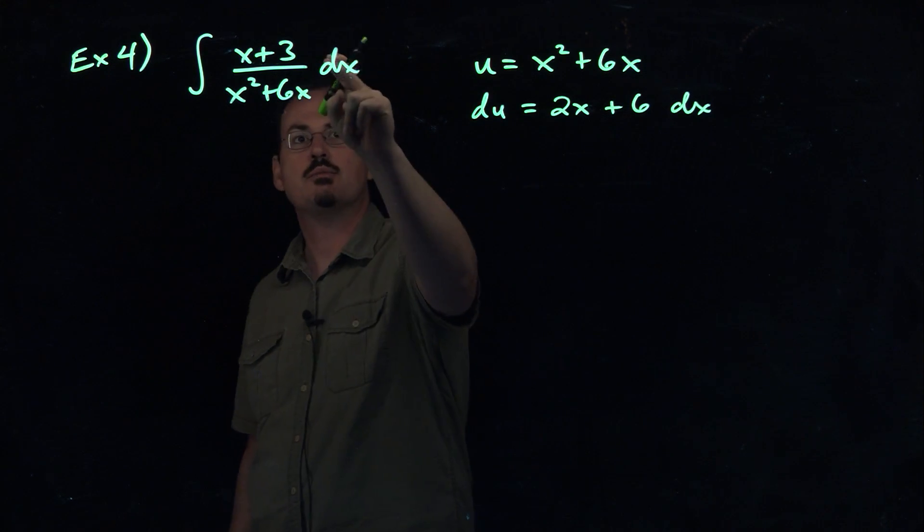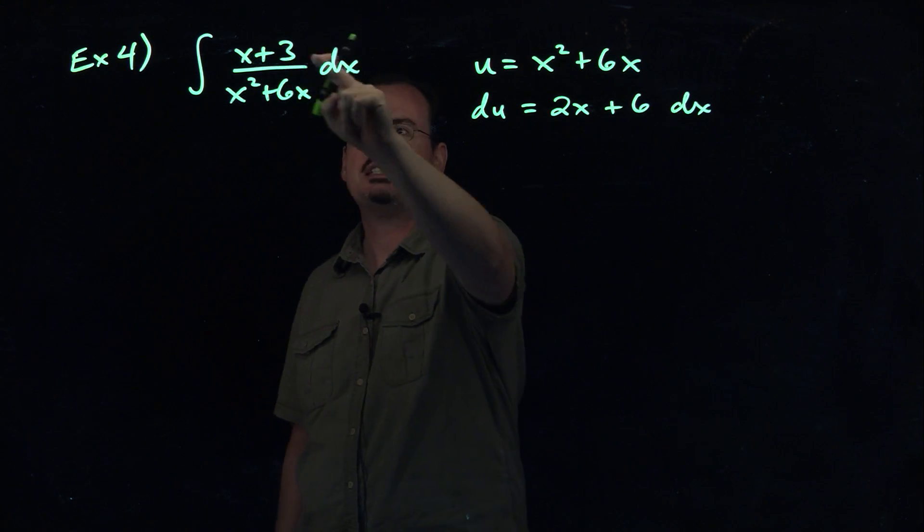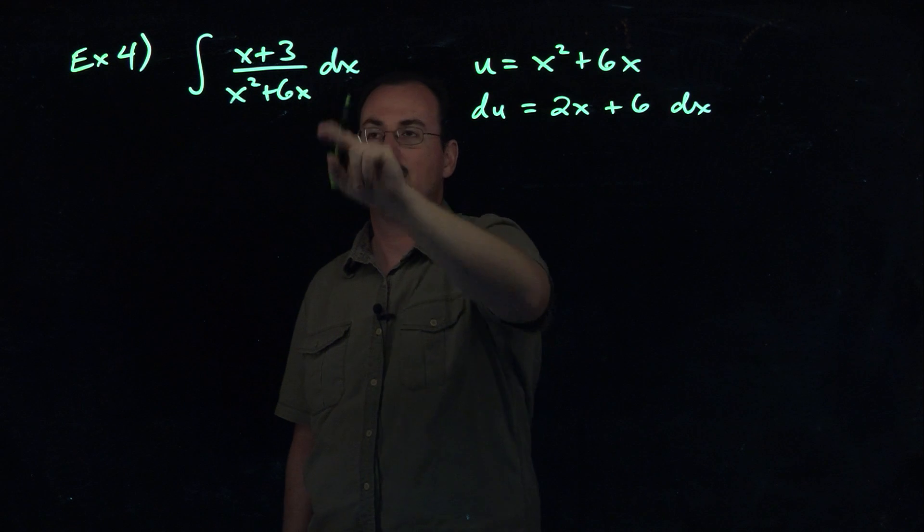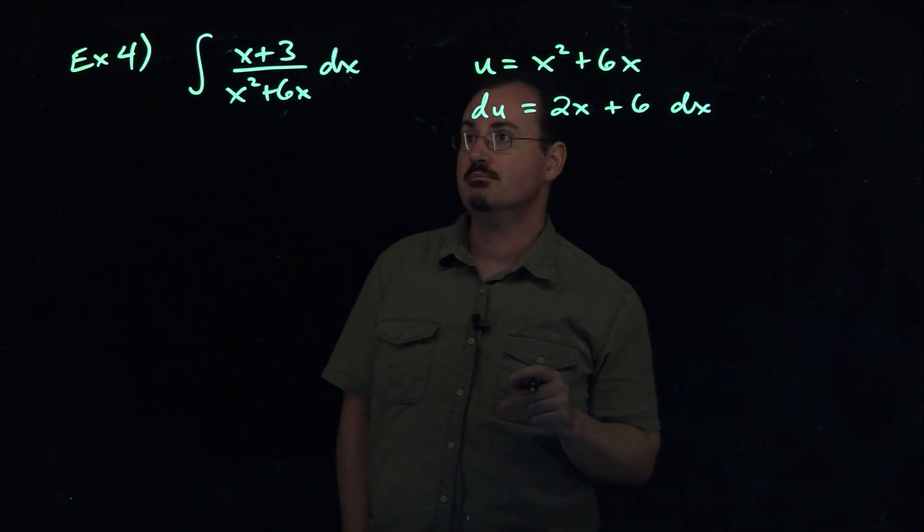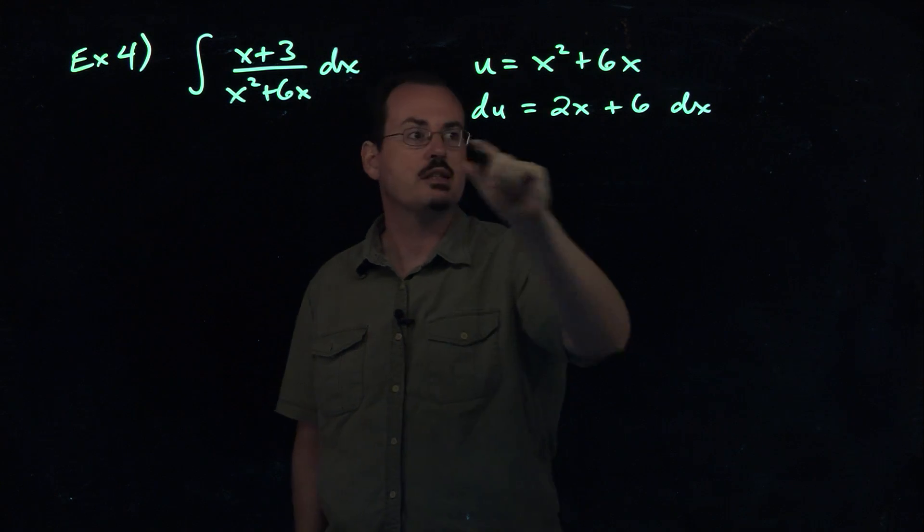So du is equal to 2x plus 6 dx. Don't forget the dx. The dx is important because it's the same dx that we're going to see here. Now we just have to compare what we see. We've taken care of the denominator here. What we want to do now is see what's left, what's in the numerator. That dx is actually considered to also be in the numerator since it's tacked onto the outside there.